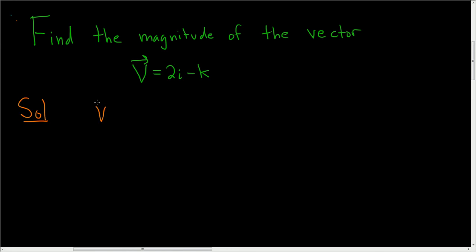So as a first step, it's useful to rewrite v, or at least think of it in the following way. It's equal to 2i plus 0j minus k.